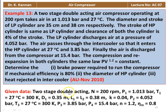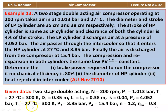Given data: two-stage double-acting compressor. Speed = 200 RPM. P1 = 1.013 bar. T1 = 27°C = 300 K. D1 (LP cylinder diameter) = 0.35 m. L1 = L2 = 0.38 m. Clearance ratio K = 0.04. P2 = 4.052 bar. T3 = 27°C = 300 K. P3 = 3.85 bar. P4 (delivery pressure) = 15.4 bar. n = 1.2. Mechanical efficiency = 0.8.